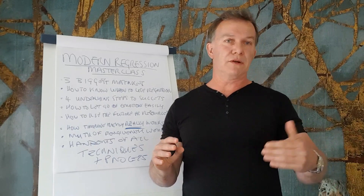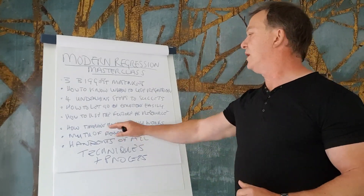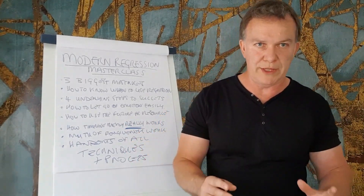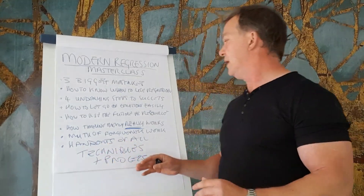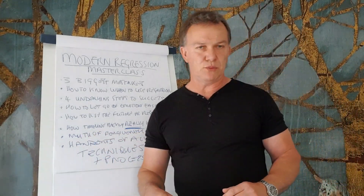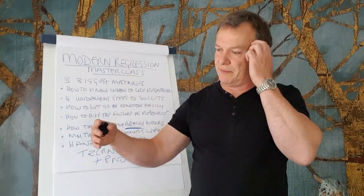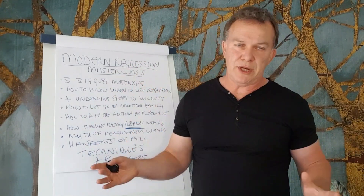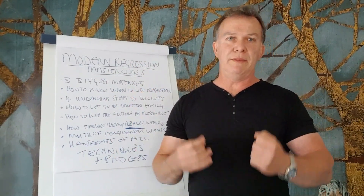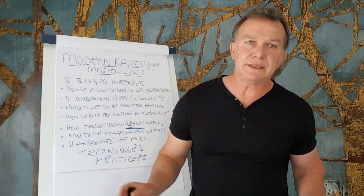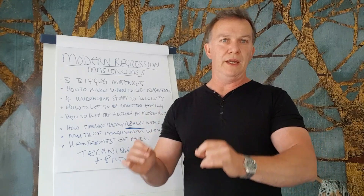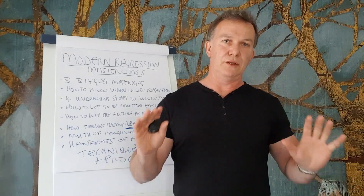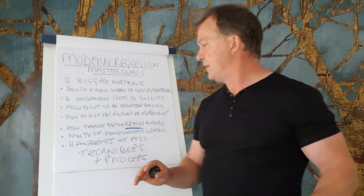If you use future resources, it becomes very simple to create change very quickly. Then we're going to look at how timeline therapy really works — the answer will surprise you, because it's probably not what you think. Then we're going to look at the myth of forgiveness work. If you look at the methods of Gil Boyne, Jerry Kine, and Cal Banyan, they do this chair therapy stuff with lots of screaming, shouting, and pounding on pillows — it's unnecessary. If you do the work properly, forgiveness is not required once the client has let go of the emotions.